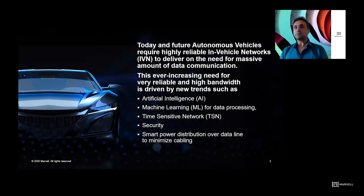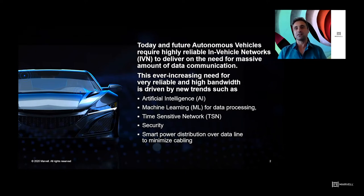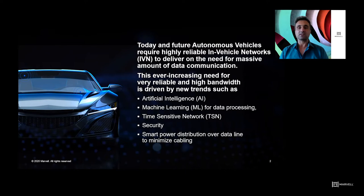Autonomous vehicles require very reliable networks to communicate massive amounts of critical data around the car. The need for reliable and high-bandwidth communications is driven by processes and features such as AI and machine learning for autonomous driving, data processing, time-sensitive networks, security, and power distribution over data lines.